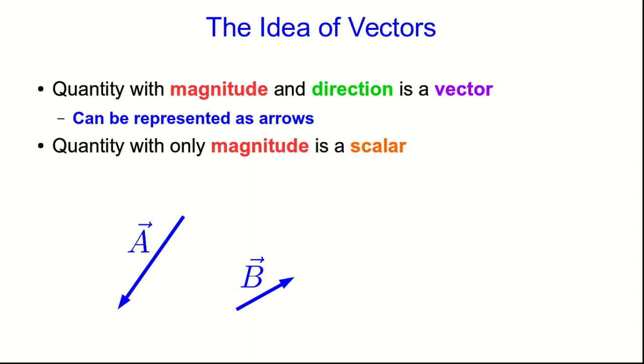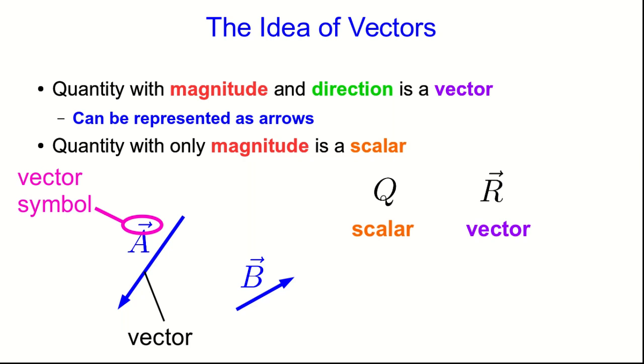So here are two vectors. I've named them A and B. Note, the big, thick arrows are the vectors themselves. The little arrows over top of the A and B are not vectors. They're vector symbols. They're just drawn there to show you, or the reader, that A and B are representing quantities that are vectors. And we always draw them pointing to the right, no matter which way the vector itself points. It's just a symbol. So if I say there are two quantities, Q and R, and I've told you nothing about what these are, you have no idea about what they're representing, except just from the way I've written them, you know that Q is a scalar, but R is a vector, because I've drawn a vector symbol on it.